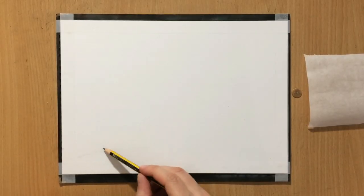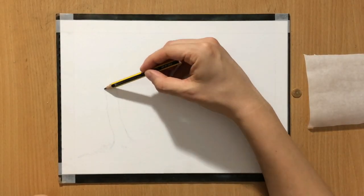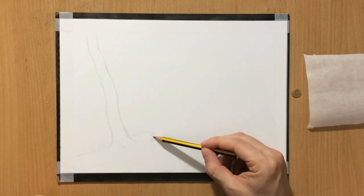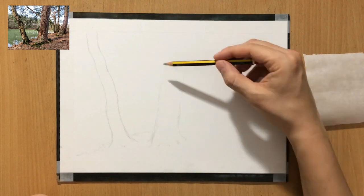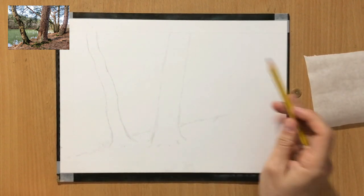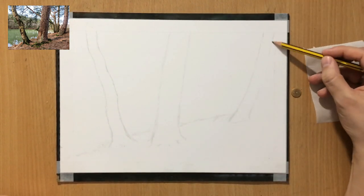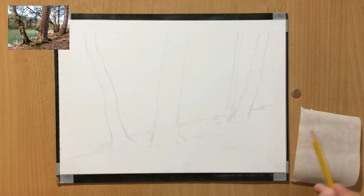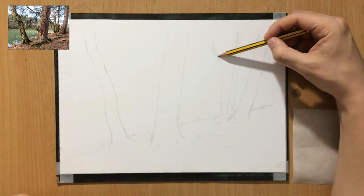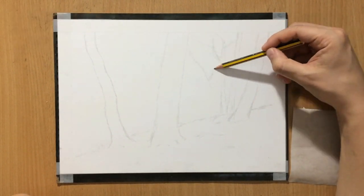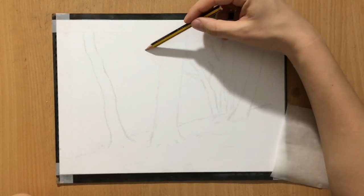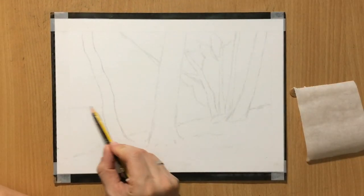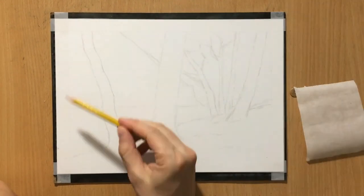I'm starting with a graphite pencil sketch as usual. Normally I wouldn't do a very elaborate sketch for a landscape, but I have a lot of trees in the foreground and I need to put them down so I can have a better idea about my composition. Also, because some of them are in front of the others, that'll help me create some depth and distance in my drawing.